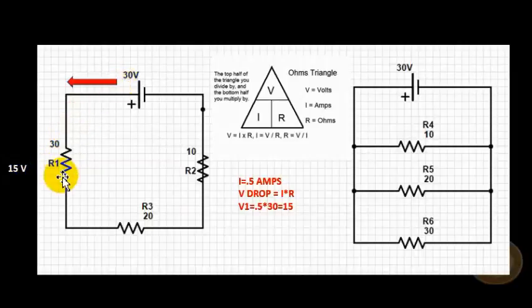For our second resistor, the voltage drop is 20 times 0.5, which is 10. The voltage drop drops down to 10 volts across this resistor. Then we do the same with this one and we have 5 volts going across that resistor.